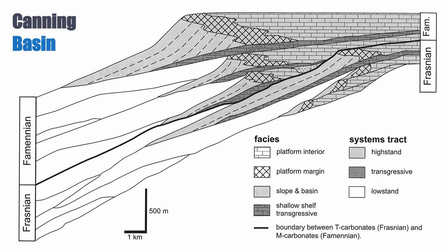Despite the fact that they are completely different factories, you cannot tell them apart on seismic or at outcrop without looking at the rocks. That's clear indication that the M factory and the T factory are very similar in their response to base level change — in part probably because the producers on the M factory, if it's a shallow water continentally attached system, are photozoan as well.